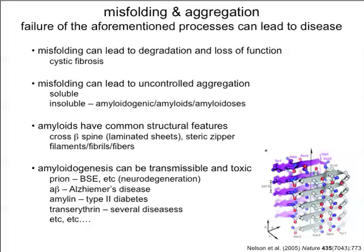What are amyloids? Well, they have common structural features that are shared by many amyloids. This consists of the so-called cross-beta spine — laminated beta sheets, also known as steric zippers. It's a little hard to see in this picture, but what we see are two beta sheets stacked against one another. This is the core of many, many amyloid structures, which lead to the formation of filaments, fibrils, and fibers — very large-scale structures that lead to a variety of kinds of diseases.